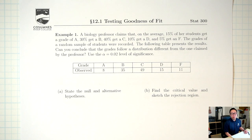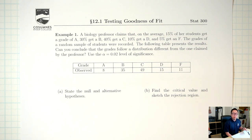Hello. So far, we've seen several different types of hypothesis tests: the one proportion, the one mean, the two proportions, and the two means. Today we're going to add another type of hypothesis test into the mix — the goodness-of-fit test.